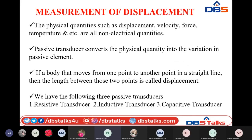Next let us see some passive transducers used for measurement of displacement. Displacement is the length of the path traveled by a body — if a body moves from one position to another in a straight line, the length between those two points is the displacement. Displacement is a physical quantity, not an electrical quantity, and this physical quantity is converted into an electrical quantity with the help of displacement sensors. These are passive transducers — they vary resistance, inductance, or capacitance values, and measuring the voltage across them gives the electrical quantity.